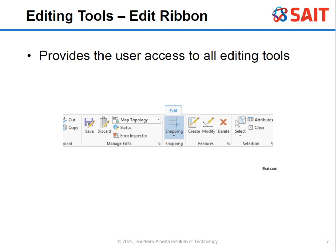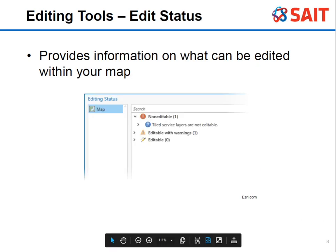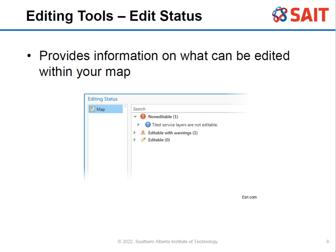There is an edit ribbon at the top of the ArcGIS Pro screen, and you'll see a whole bunch of different editing tools. Probably one of the most important is Save — make sure you know where the save button is. There is also an edit status window that tells you what can be edited.